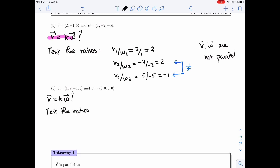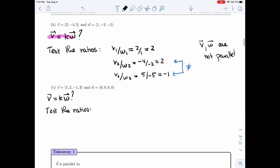So that means solving for K in all three components, or four components here. But let's try V1 over W1. I get 1 over 0. So the ratio doesn't make any sense here because of W1 being 0.